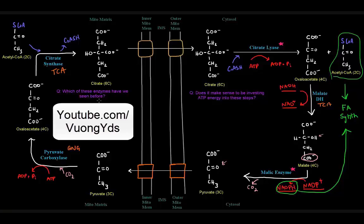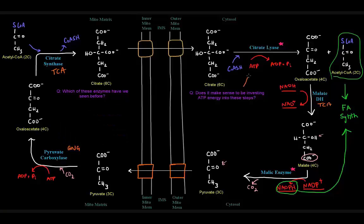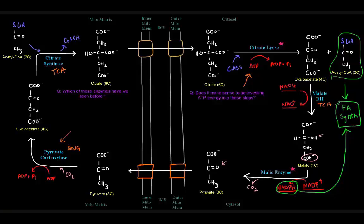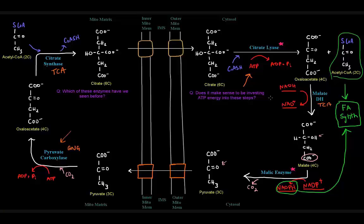Does it make sense to be investing ATP energy into these steps? Well, what are we really trying to do? We're trying to get acetyl-CoAs from the mitochondrial matrix to the cytosol for fatty acid synthesis. If we're building fatty acids, we're probably not breaking them down — we normally don't have opposing processes occurring at the same time, so beta-oxidation is not occurring. If we want to build fatty acids, we want to store energy, which means we probably already have some. So it does make sense that we are investing ATP in this whole pathway.